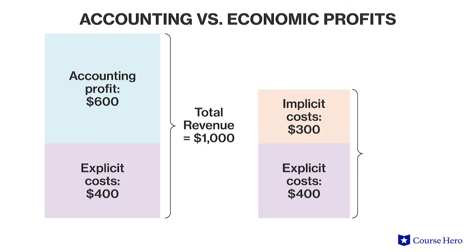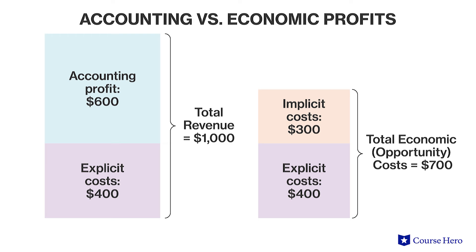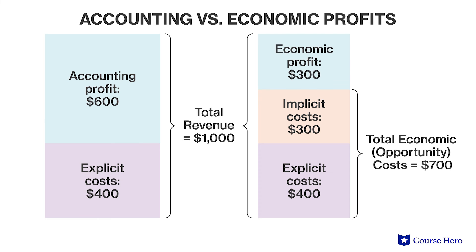The accounting profit is equal to $1,000 minus $400, or $600. However, the economic profit is equal to $1,000 minus the explicit costs of $400 and the implicit costs of $300. The economic profit is only $300, which is only half as much as the accounting profit.